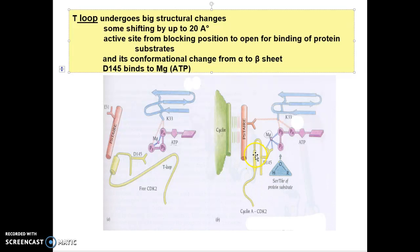Some portion changes from alpha helix to beta sheet. D45 makes a bond with magnesium ATP complex.